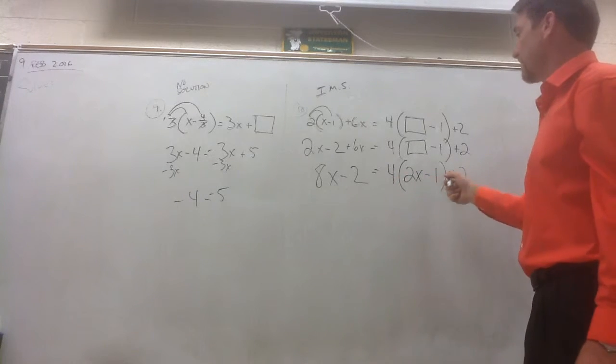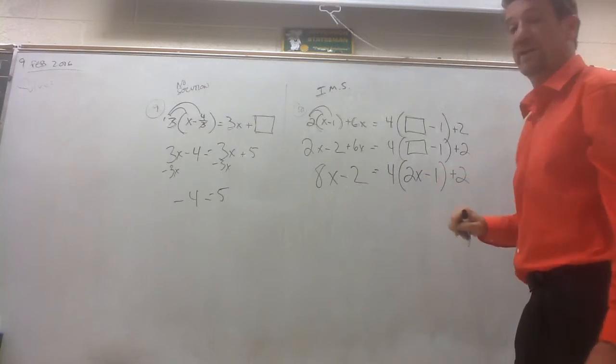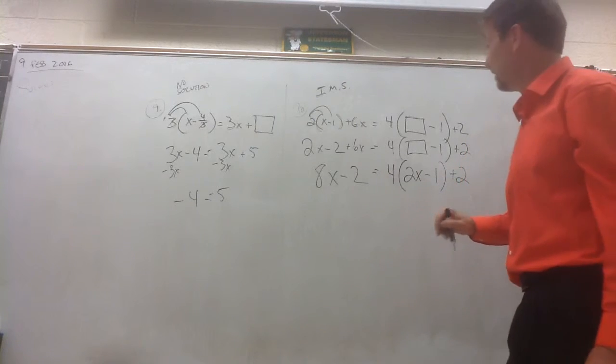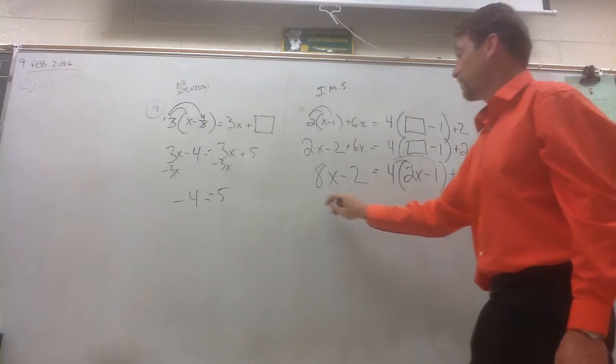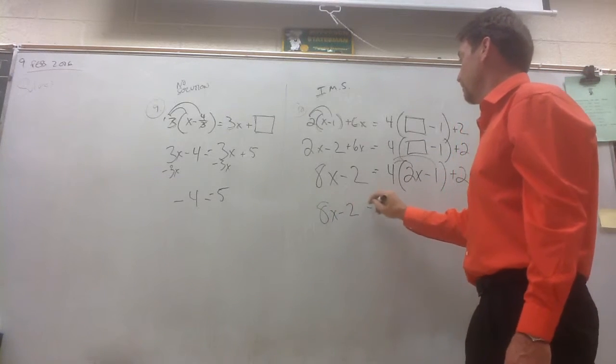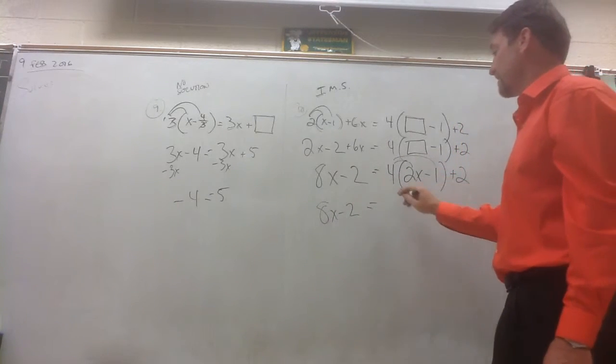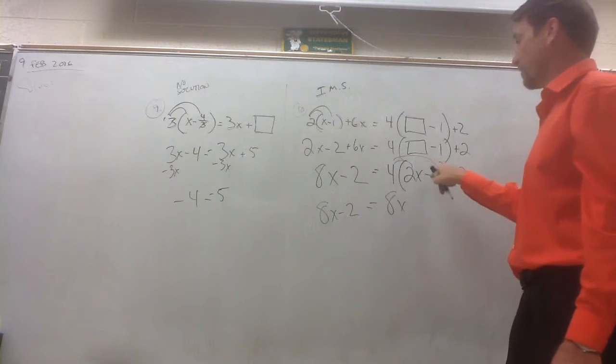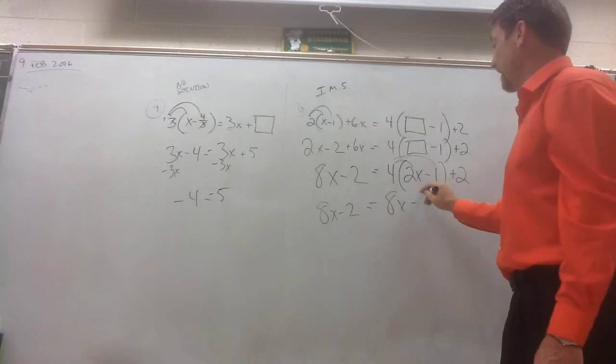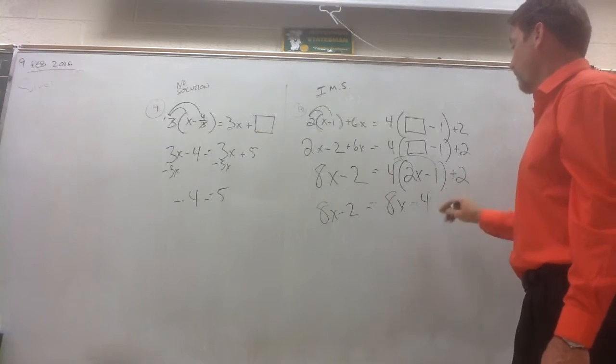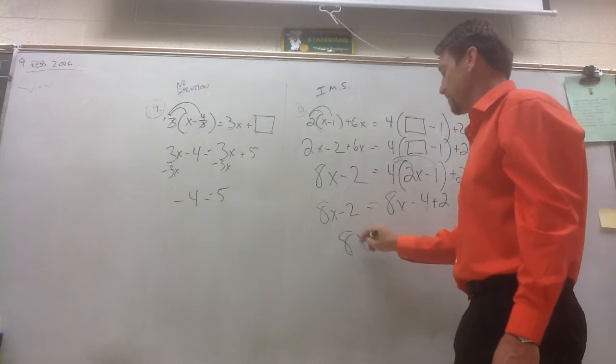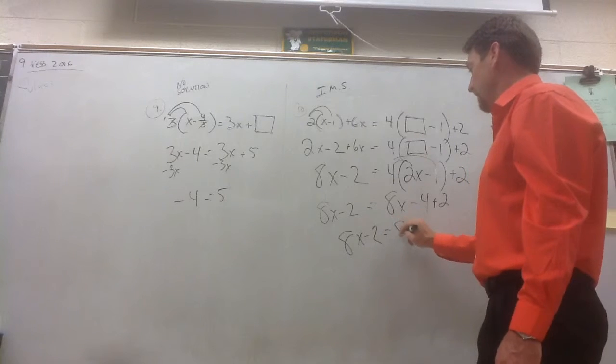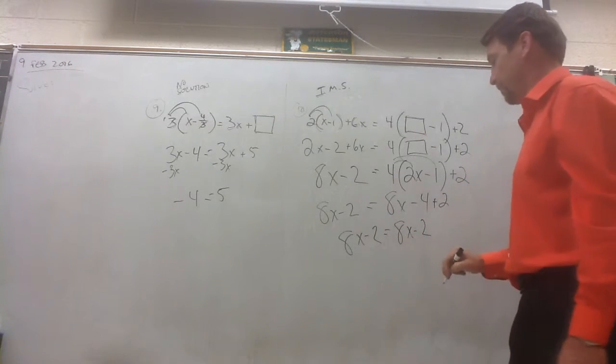And now when you distribute this, 4 times negative 1 is going to be negative 4. And then you add 2. And you're going to have 8x minus 2 equals 4 times 2x's. 8x, 4 times negative 1 is negative 4. And negative 4 plus 2. Negative 4 plus 2 is negative 2. So we've got 8x minus 2 equals 8x minus 2.